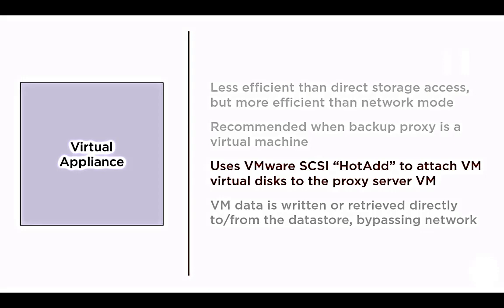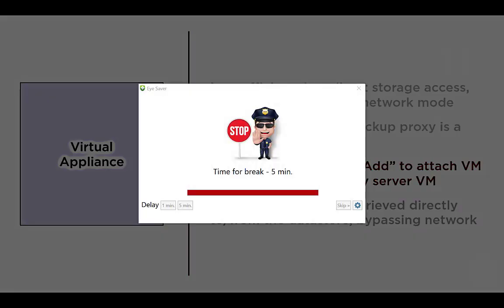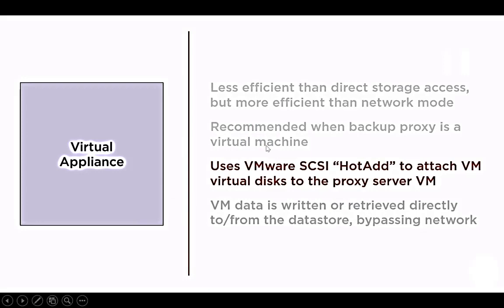The second method is Virtual Appliance mode, which I am also using in my environment. In this method we use virtual machines, and with the help of a virtual machine we can perform the function of a VM proxy server. This is less efficient than Direct Storage Access but more efficient than Network mode. It is recommended when the backup proxy server is a virtual machine. What this method does is attach your virtual machine's hard drive to the backup proxy server VM.